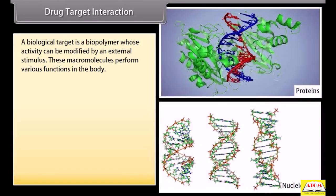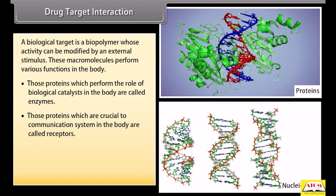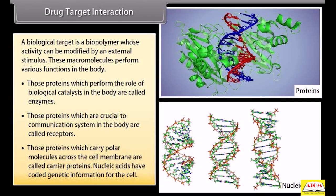A biological target is a biopolymer whose activity can be modified by an external stimulus. These macromolecules perform various functions in the body. Proteins which perform the role of biological catalysts are called enzymes. Proteins crucial to the communication system in the body are called receptors. Proteins which carry polar molecules across the cell membrane are called carrier proteins. Nucleic acids carry coded genetic information for the cell.